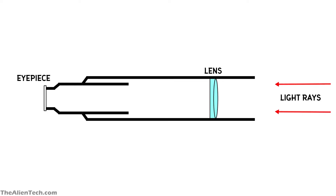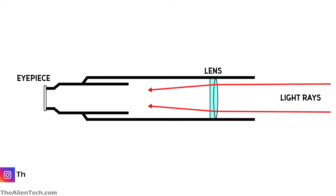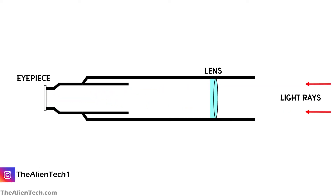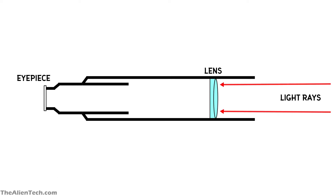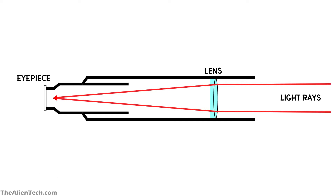Usually, a telescope works like this. Light is collected from the aperture of the telescope and it is transmitted to the focuser, which is the part where the eyepiece goes, so you can see the image formed.